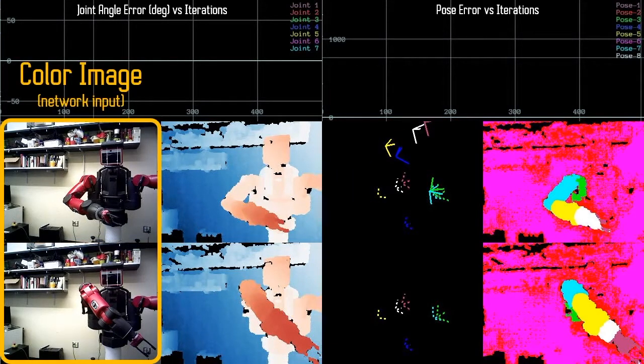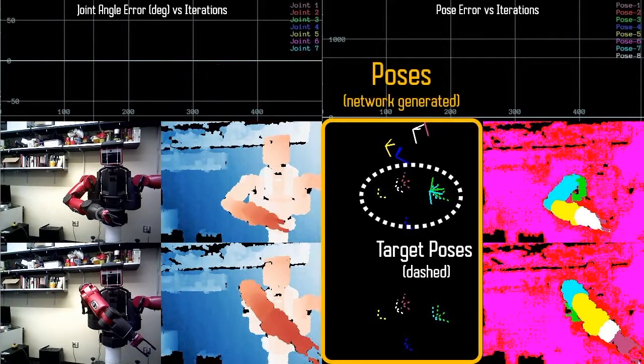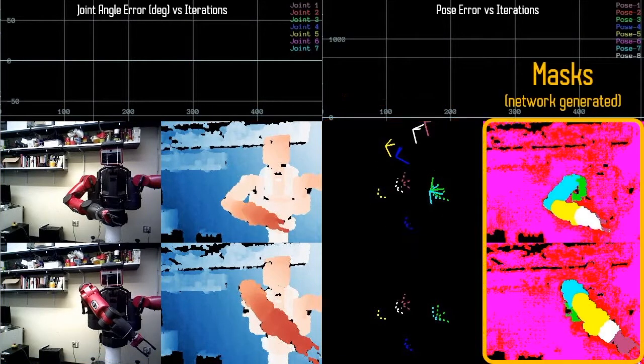And from right to left, we have color image, depth image, predicted poses, and the predicted segmentation masks.